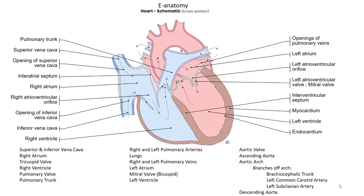Now let's look at the blood flow within the heart itself. You have the superior and inferior vena cava coming into the right atrium. From there it goes through the tricuspid valve into the right ventricle, and then out through the pulmonary valve into the pulmonary trunk and the left and right pulmonary arteries. The arteries take blood away from the heart, and this is actually deoxygenated blood that's going into the lungs.